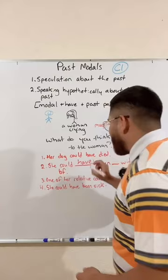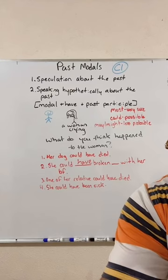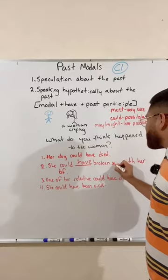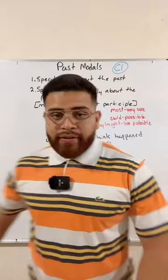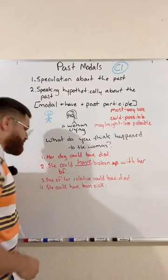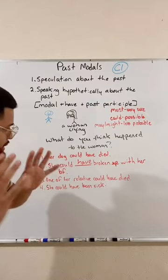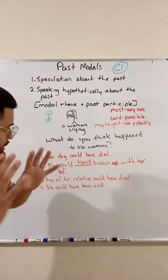Somebody said 'have' — yes, 'have' is missing. She could have broken up with her boyfriend. Marco says she must have fought with her boyfriend — hopefully not physically, that's domestic violence. You can use past modals to speculate. These sentences are excellent examples of speculation. Let's move on to the next part of past modals: speaking hypothetically about the past.